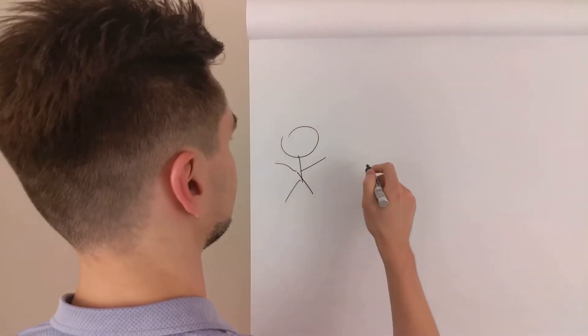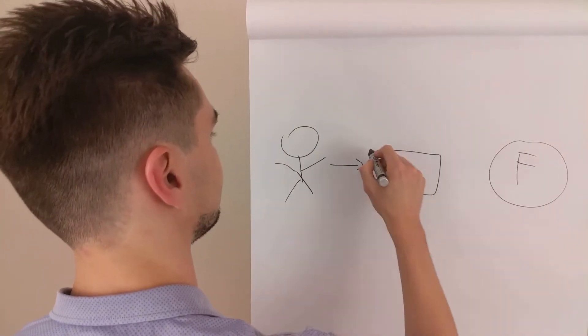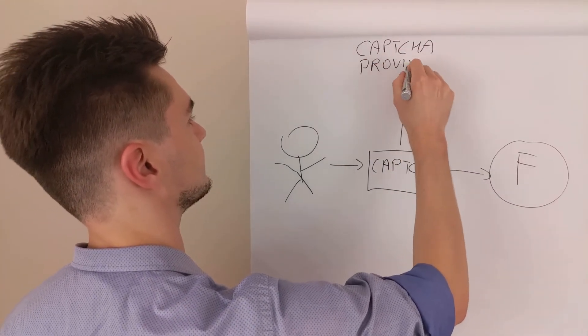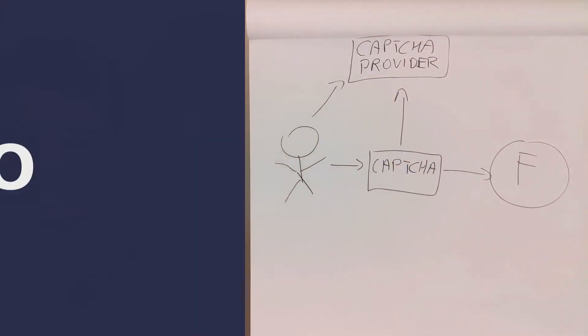We've got the user and a protected asset or function. To reach the final element, one must go through a CAPTCHA. Most of them implement an external component, the CAPTCHA provider.